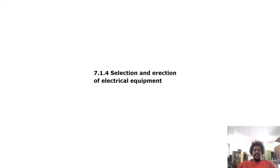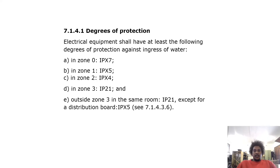Selection and installation of electrical equipment — degrees of protection: electrical equipment shall have at least the following degrees of protection against ingress of water: in zone 0, IPX7; in zone 1, IPX5; in zone 2, IPX4; in zone 3, IP21; and outside zone 3 in the same room, IP21 — except for distribution boards, which require IPX5.